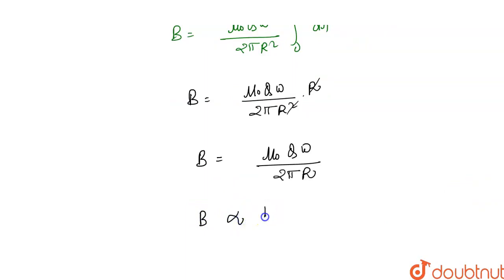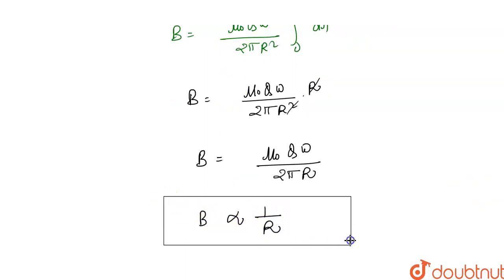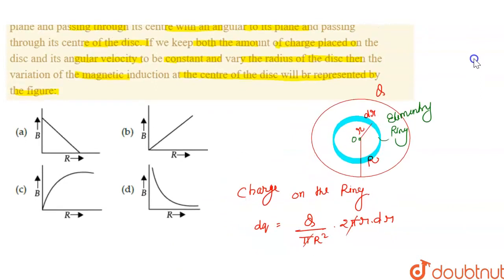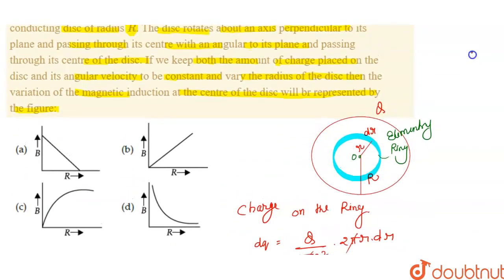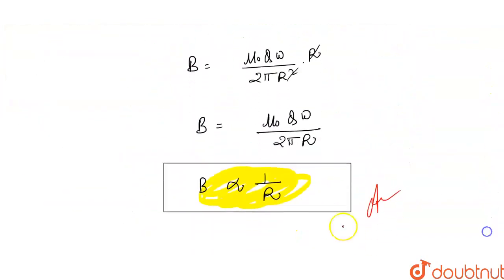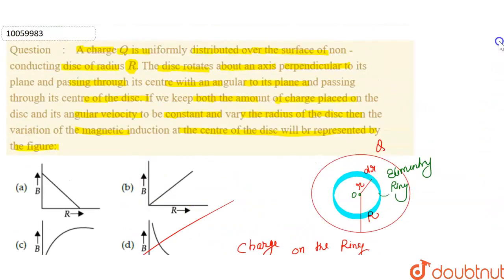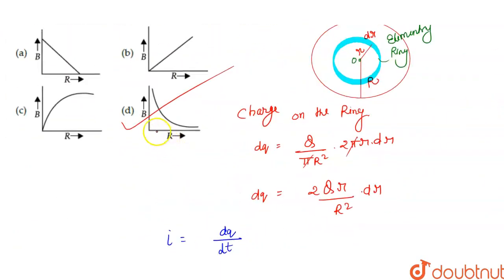So the magnetic field is inversely proportional to 1 over R. So here the correct answer is option D. I hope you liked this video, thank you so much for watching.